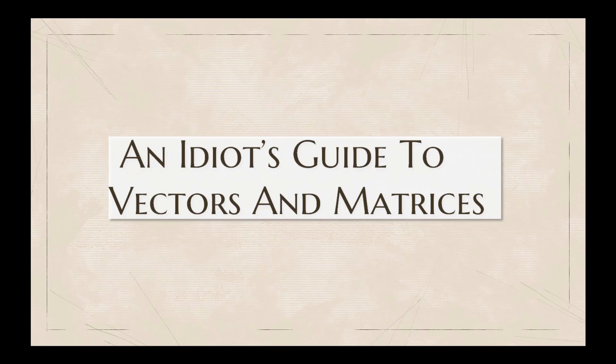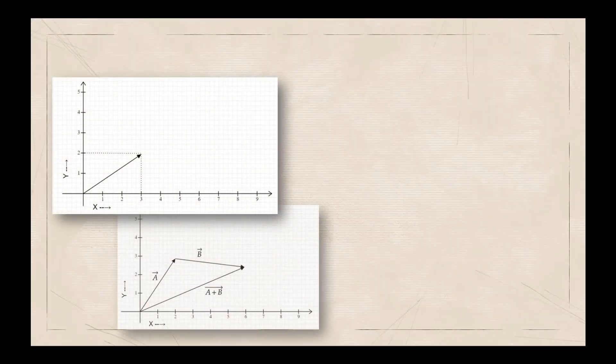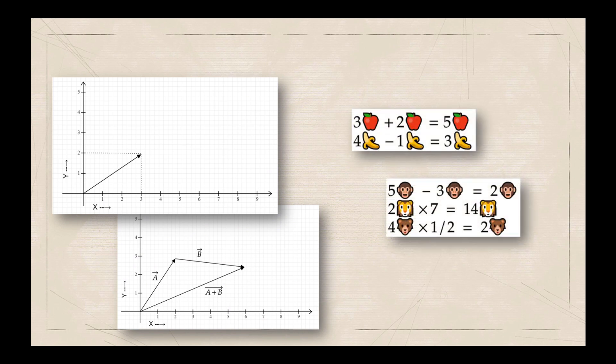Hello everyone, welcome to an idiot's guide to vectors and matrices. This video is for those who are interested to learn about vectors and matrices, or for those who have learnt it but don't have a clear understanding of them. Usually coordinate system geometry is used to introduce vectors and matrices, but I am going to stick to basic arithmetic here to explain these concepts. I'm not planning to touch all aspects of linear algebra in this video, but I will try to make the fundamentals clear, based on which the other concepts can be understood relatively easily.